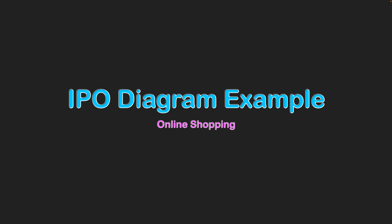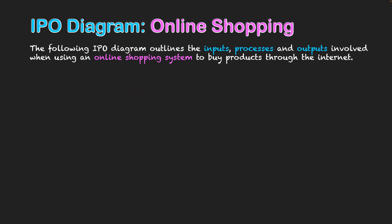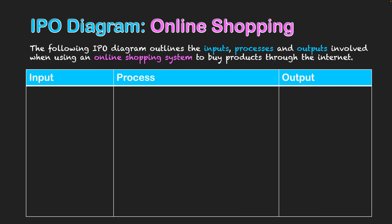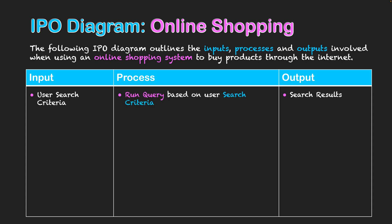IPO diagram example: online shopping. The following IPO diagram outlines the inputs, processes, and outputs involved when using an online shopping system to buy products through the internet. Here's our diagram, and we'll go through this in a sequential manner. Firstly, we're going to have the user entering their search criteria into the online shopping system, and by doing so the system will run a query based on the user's search criteria.